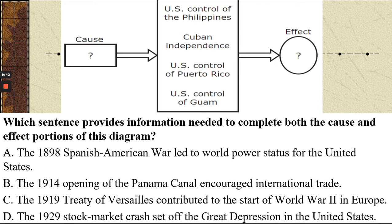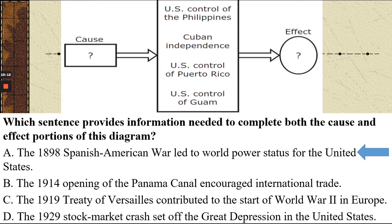Here's an old EOC question — cause and effect. U.S. control of Philippines, Cuban independence, U.S. control of Puerto Rico, U.S. control of Guam. What is the answer? The answer is the 1898 Spanish-American War. It was the first time the United States beat a European power in a war. The Spanish had wooden ships; we had metal ships. It was real easy.